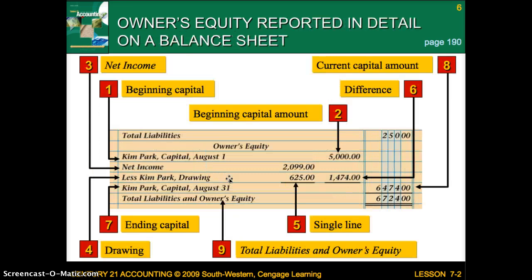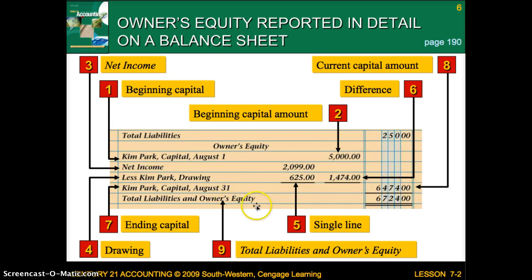Owner's equity can also be reported in detail on a balance sheet. You'll have your beginning capital, then your net income, then less your drawing — because you need to take any drawing out. The difference will go here, and your ending capital, your current capital amount, will go here. Then your total liabilities and owner's equity will go here.